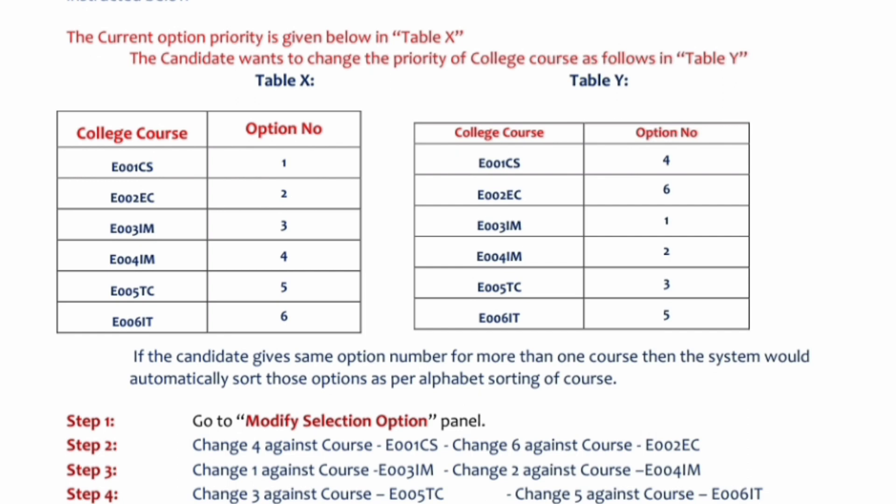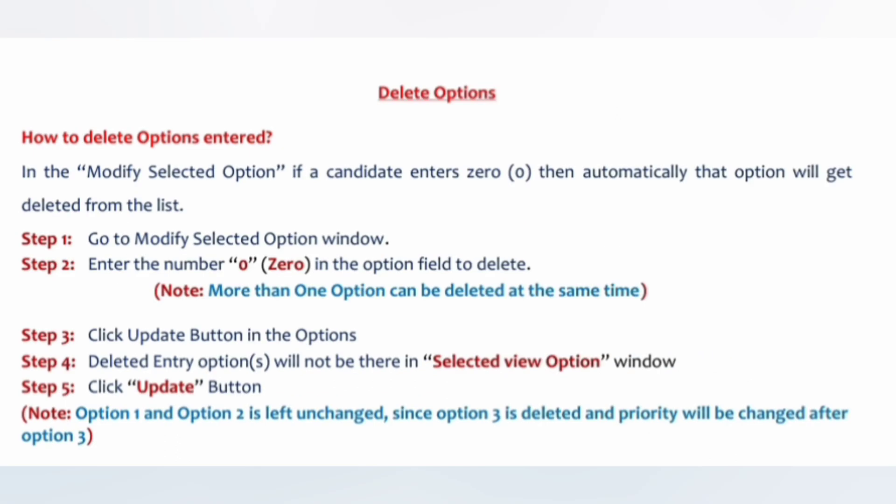The next step is to delete an option. Similar to what you do for modifying, go to the delete options steps, select and open the window, and in front of whatever option you want to delete, put zero. Zero means delete — you are not giving it any priority number. Add zero in front of all options you want to delete.